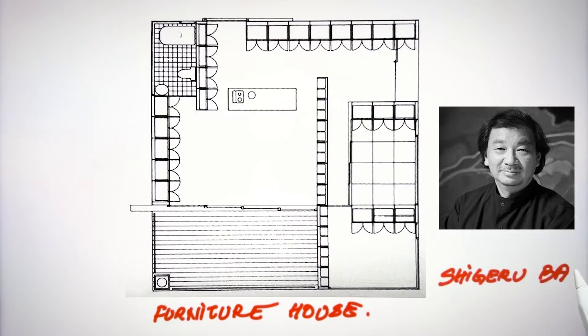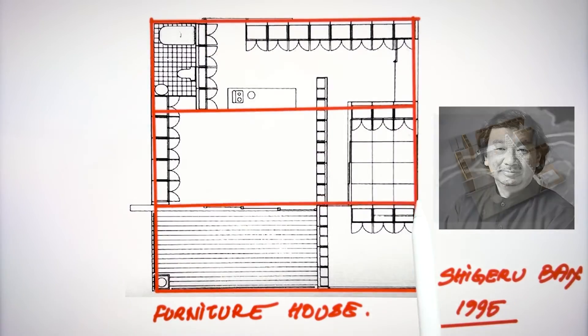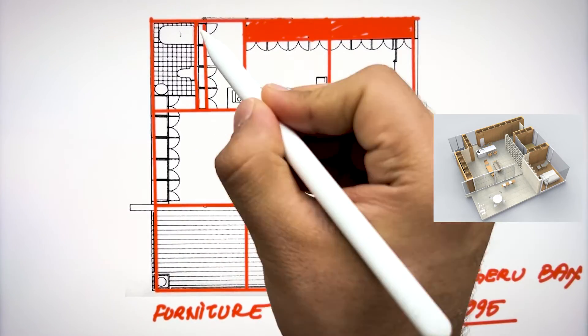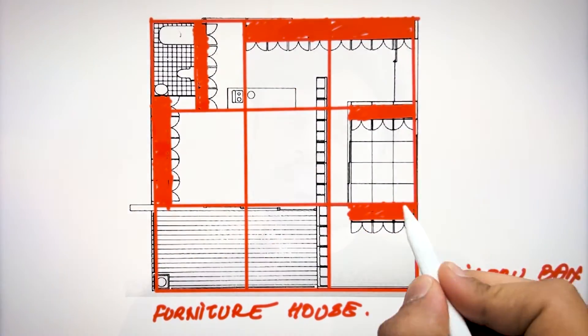Shigeru Ban who won the Pritzker Prize in 2014 also followed the concept of nine grid in his furniture house in 1995. You can understand here that the Mughal architecture, the Indian architecture, the temples, the Christian architecture, the Greek cross all have somehow followed the same concept of nine grid. Even the great masters of architecture also have followed the same principle of nine grid into their design.